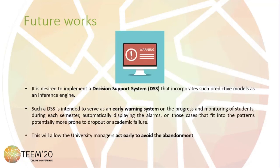For future work, it is designed to implement a decision support system that incorporates such predictive models as an inference engine. Such a DSS is intended to serve as an early warning system on the progress and monitoring of students during each semester, automatically displaying alarms on those cases that fit into the pattern potentially more prone to dropout or low academic value. This will allow university managers to act early to avoid abandonment.